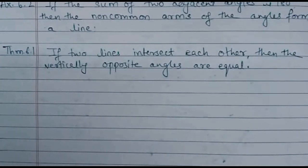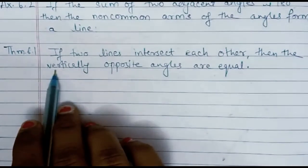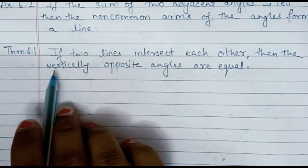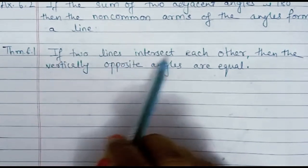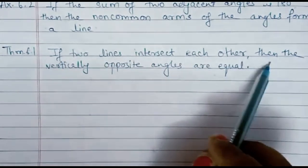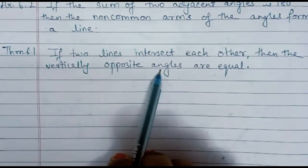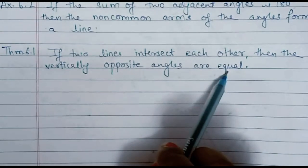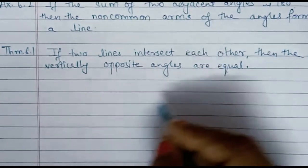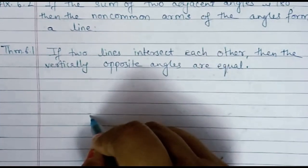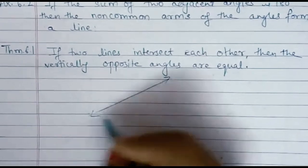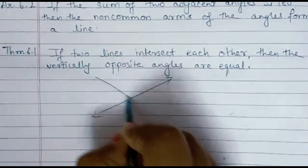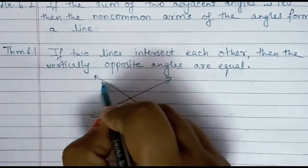Now let us come to theorem number 6.1 which we are going to prove. If two lines intersect each other, then the vertically opposite angles so formed will be equal in measure. So it is quite obvious, I will show you by a figure. We have two lines, line CD and line AB, intersecting each other.